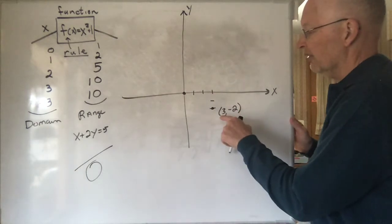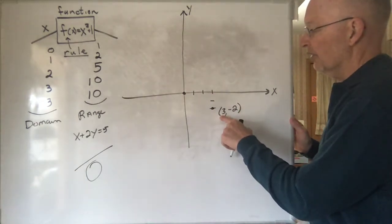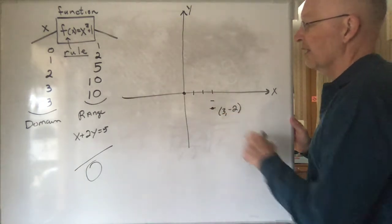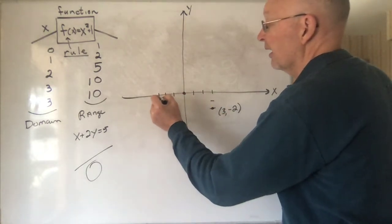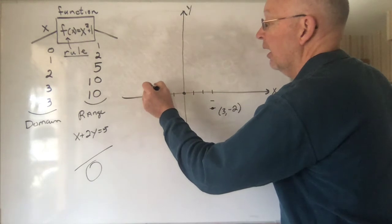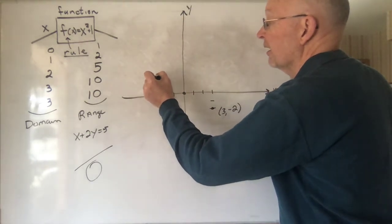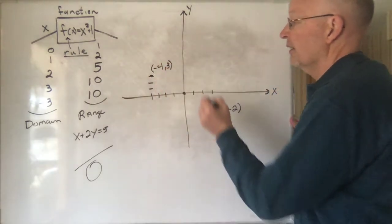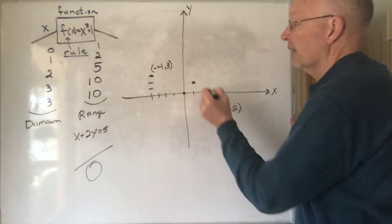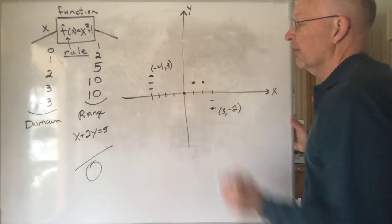You always do the x distance first and then the y distance. So, this point right here would be (negative 4, 3) right there, and so on. Here's the point (1, 1) right there. Here's the point (2, 1) right there.